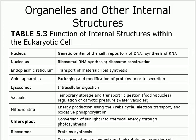The Golgi apparatus packages and modifies products — specifically proteins — prior to secretion. We called it the 'finishing deck' in physiology. Like a factory making laptops: you don't take them directly from the machines to outside; you send them to the finishing deck where they are checked, painted, packaged, and then exported. That's basically the Golgi apparatus — it takes, packs, and modifies.